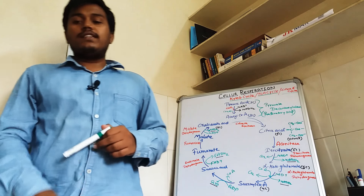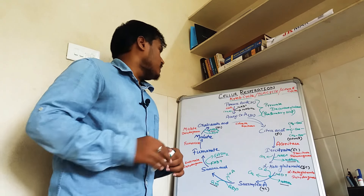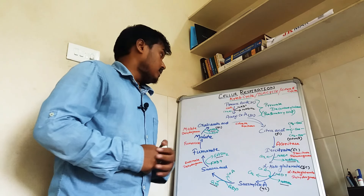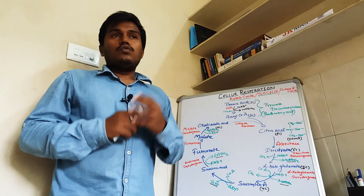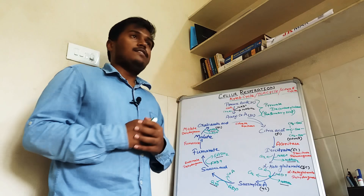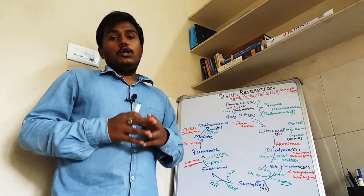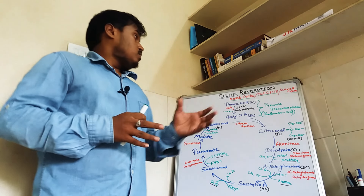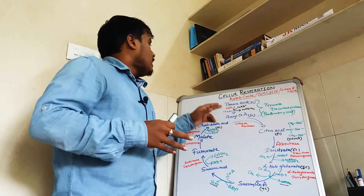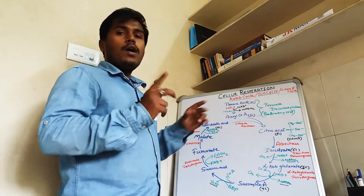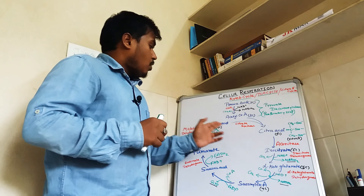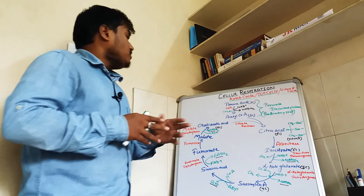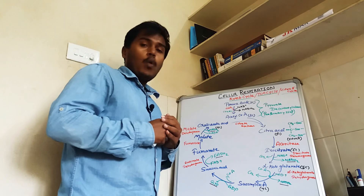We are going to discuss the second step of cellular respiration, that is the Krebs cycle. The first step we discussed was glycolysis. The product we got from glycolysis is pyruvic acid — one glycolysis gives us two pyruvic acid. The pyruvic acid is synthesized in the cytoplasm and will diffuse into the mitochondria. Here we are considering one pyruvic acid, and at the end we will multiply by two.